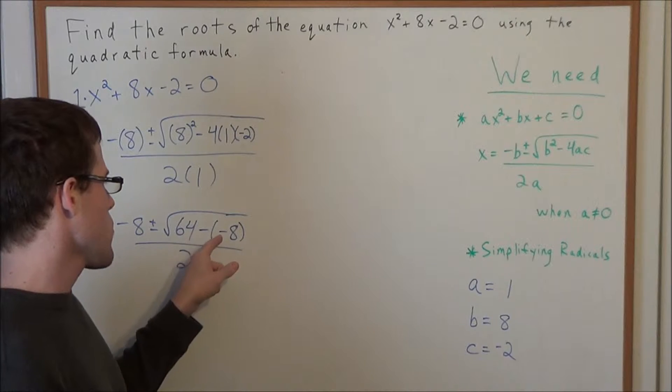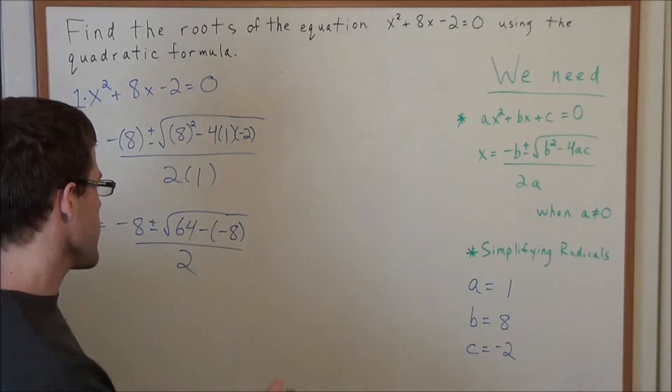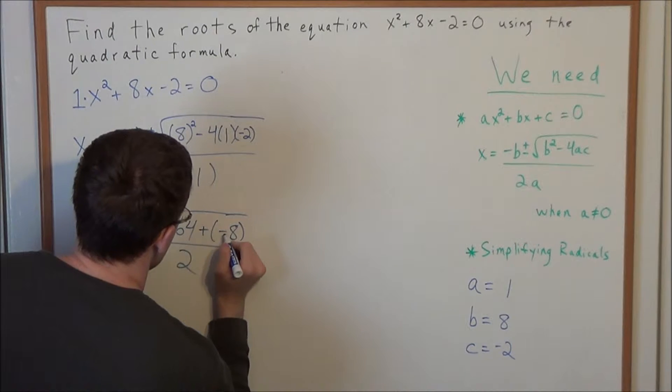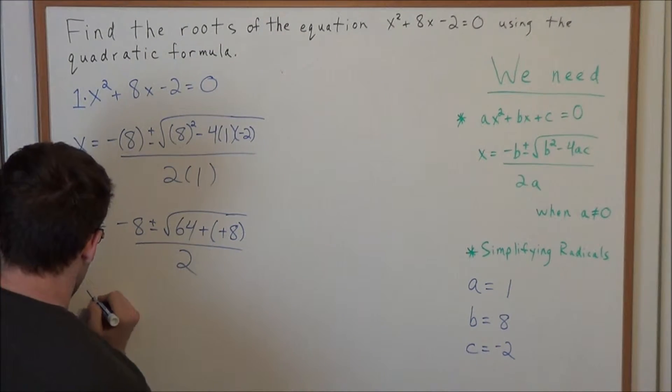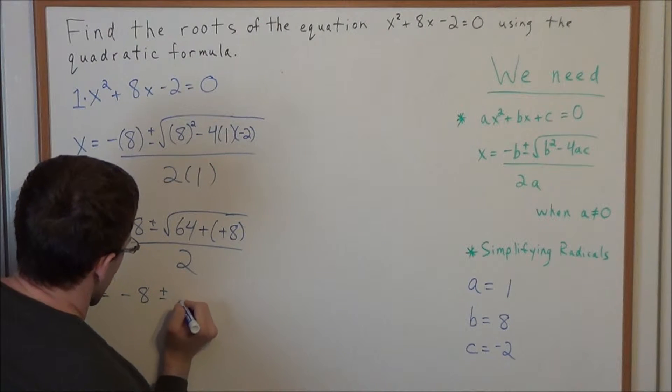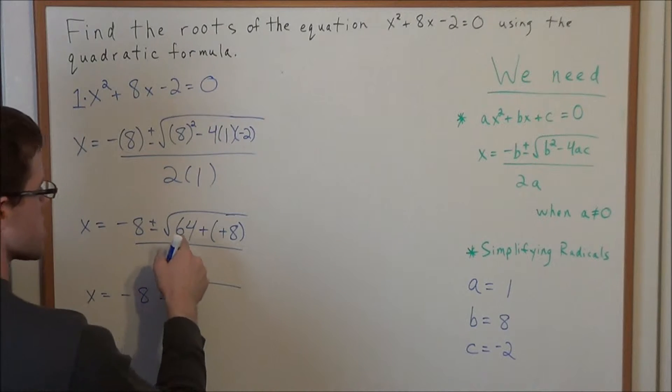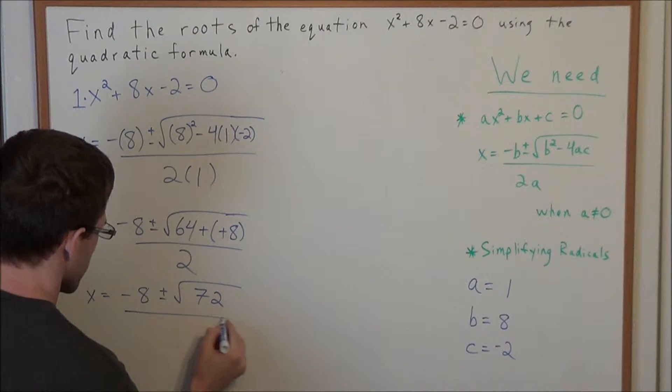But now we need to simplify what's underneath this radical. We have 64 minus a negative 8. So this is going to turn into an addition problem. So now we have 64 + 8. So on the next line, we could write -8 ± √(64 + 8) = -8 ± √72, and remember, all divided by 2.